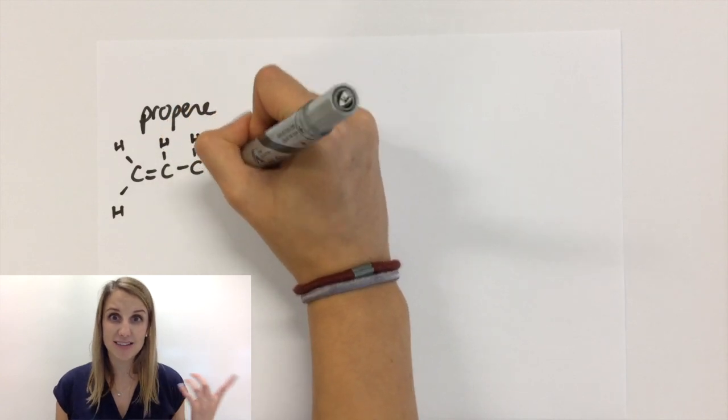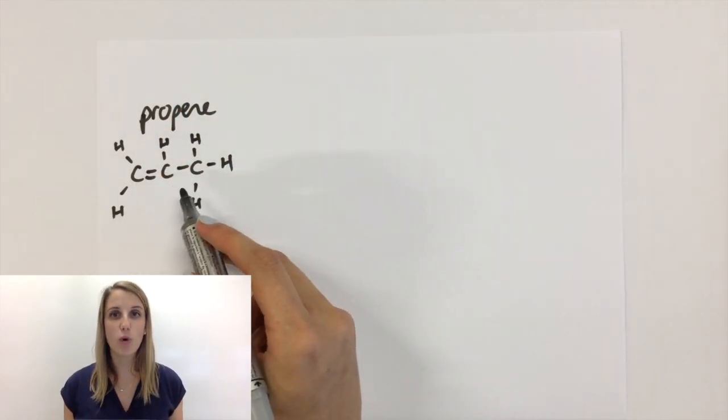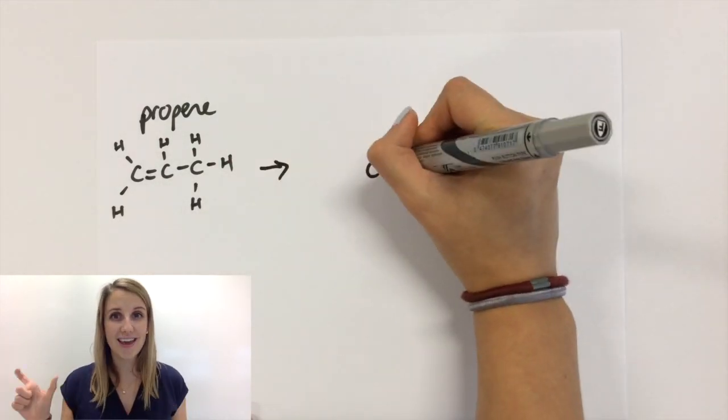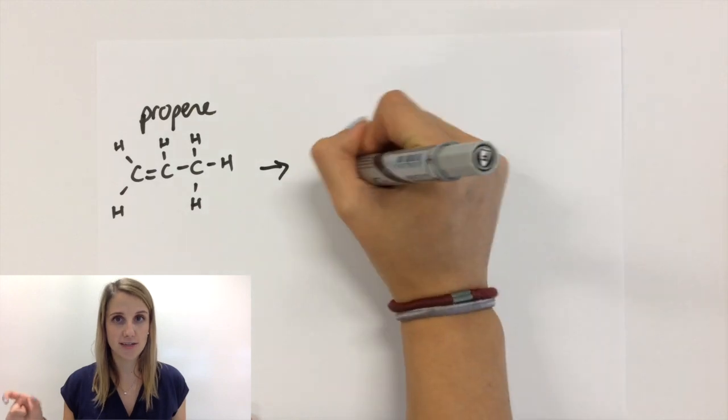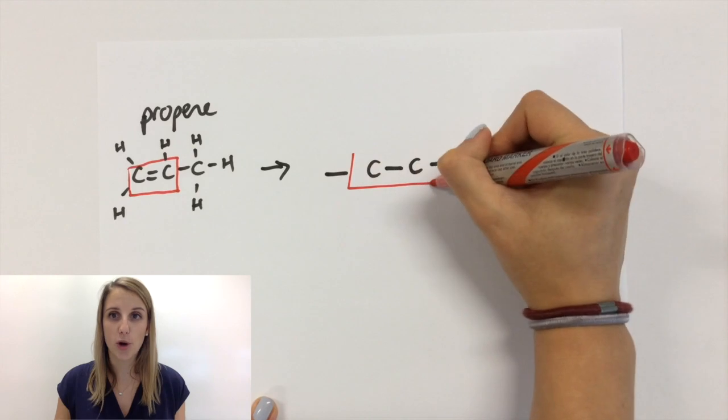The first thing that we do, as normal, is break the double bond open, but this time what I'm going to do is I'm going to draw out the two carbons that were in that double bond first, because they're the two carbons that now have space to add on new bonds.